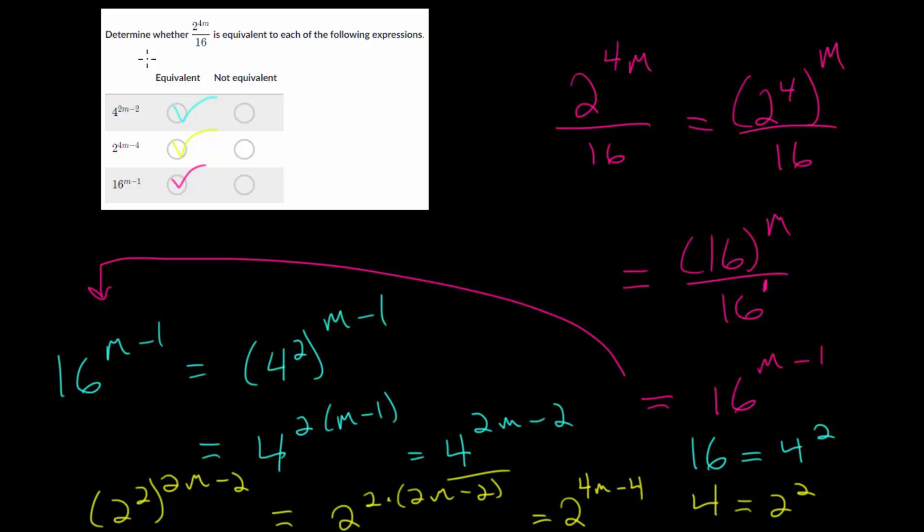And even if it's something simple, just rewriting this as 2 to the 4th to the m, from there, you might see your path. So when you get stuck, just ask, is there anything that you can do? Can I rewrite an expression in a different way? Can I use an exponent property in a unique way?